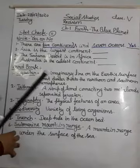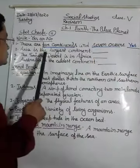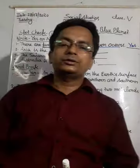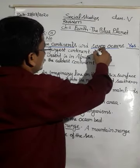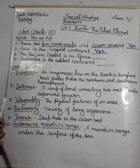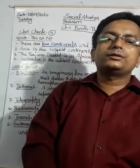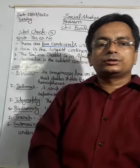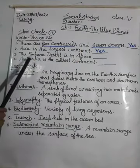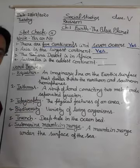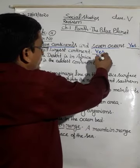Next is: Asia is the largest continent. This is correct — the largest continent is Asia. Can you tell me, India lies in which continent? Yes, Asia continent, which is the largest continent of the world. Next is: the Sahara Desert lies in Africa. Yes, the Sahara Desert lies in Africa, so its answer will be yes — right.